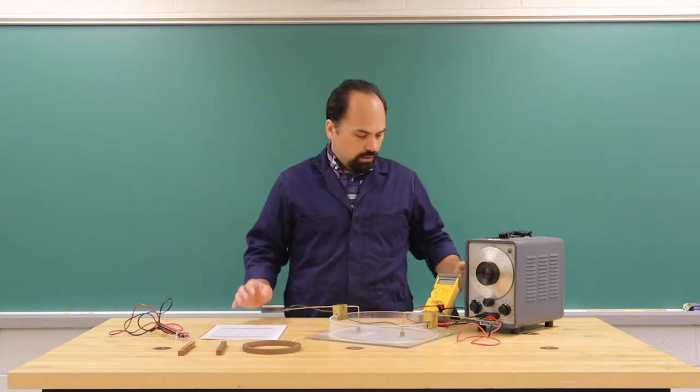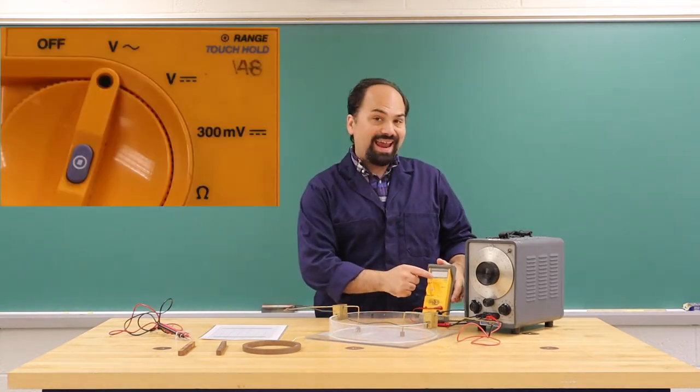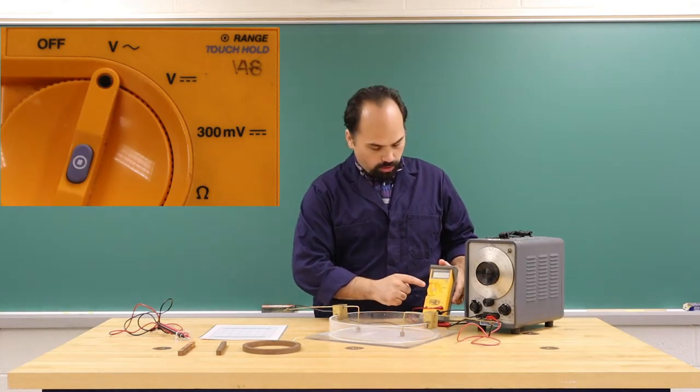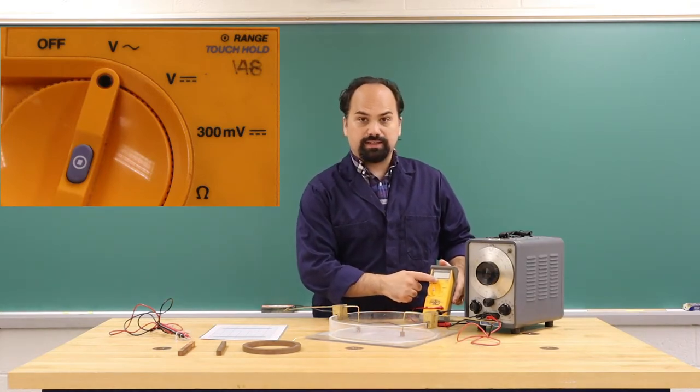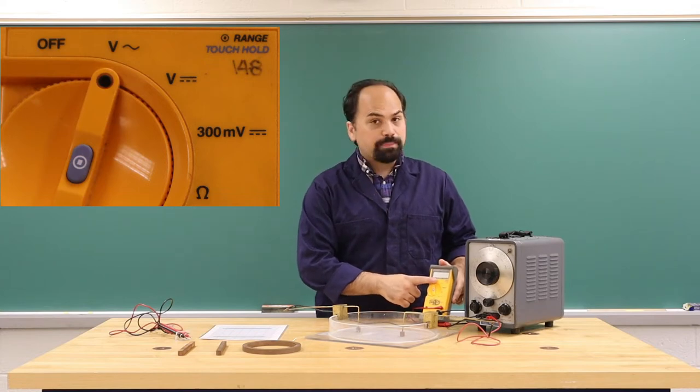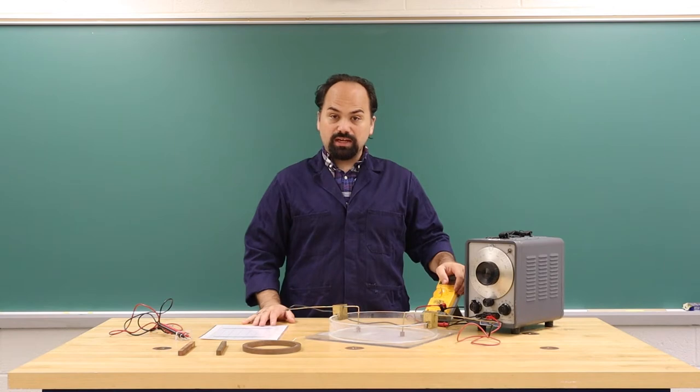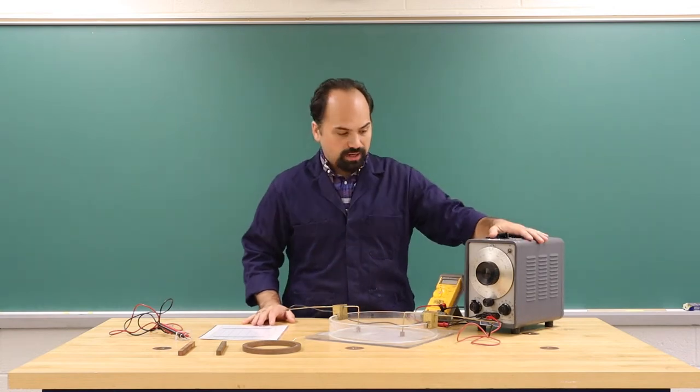We won't notice that flipping because we will be using the AC voltage setting on the multimeter, which is the wiggly line next to the V, which just gives an absolute value of that measurement.